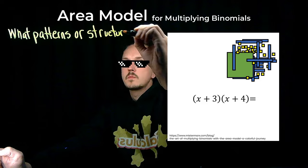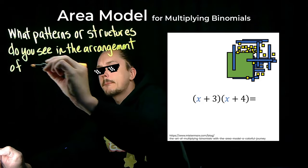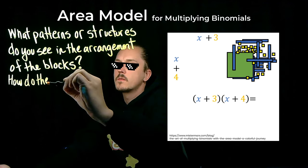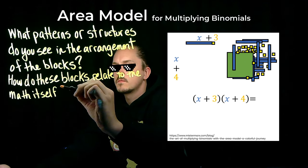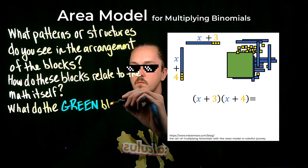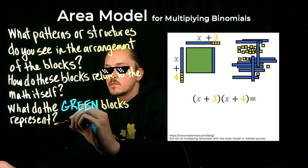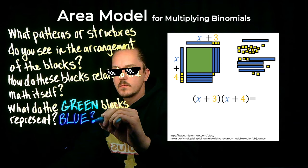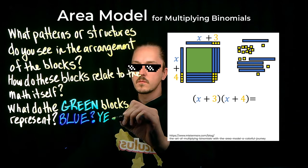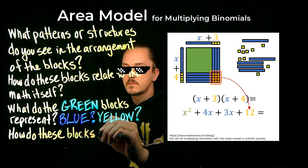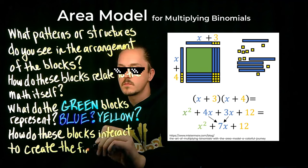What patterns or structures do you see in the arrangement of the colored blocks? How do these blocks relate to the math itself? What do the green blocks represent in the area model? What do the blue blocks represent? What do the yellow blocks represent?